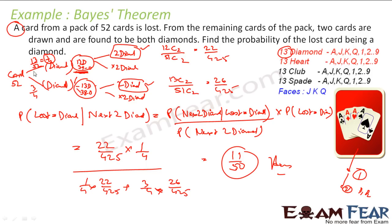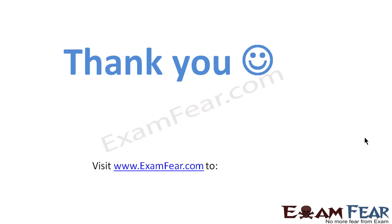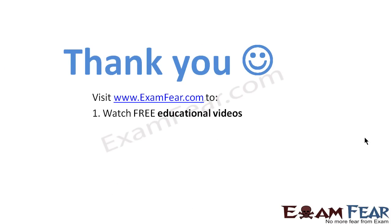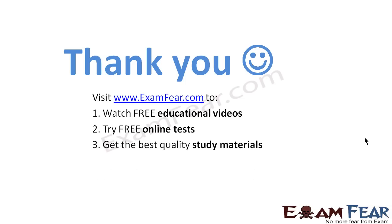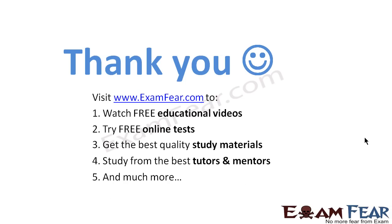I hope this part is clear. We had a pack of 52 cards, took out one card — scenarios: it may be diamond or may not be diamond. From the remaining 51 cards, two cards drawn were diamond. We don't know which scenario occurred, so we use Bayes' theorem to find P(lost = diamond | next two = diamond). Visit examfear.com to watch free educational videos, try free online tests, get the best quality study materials, and study from the best tutors and mentors. Thanks.